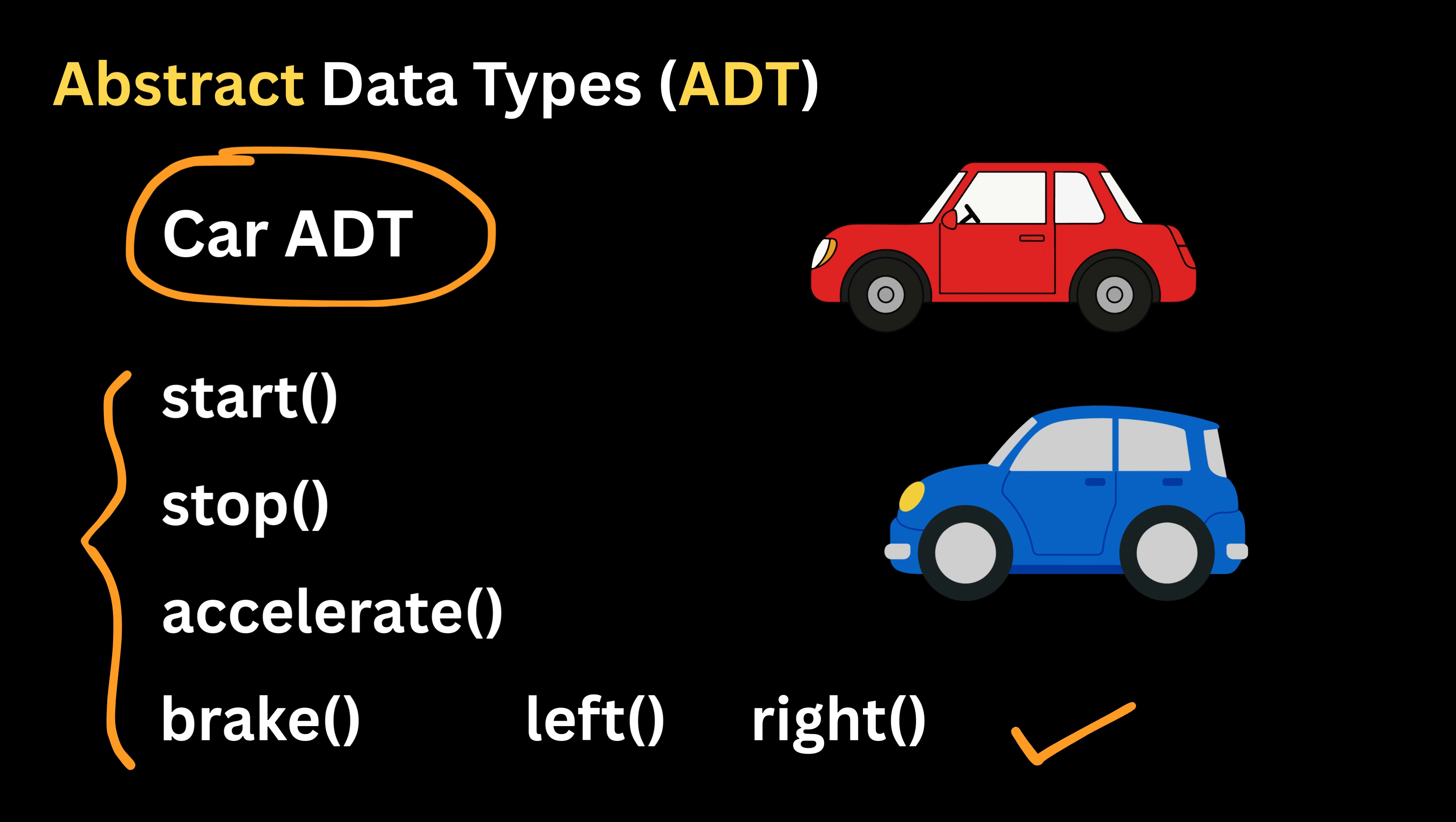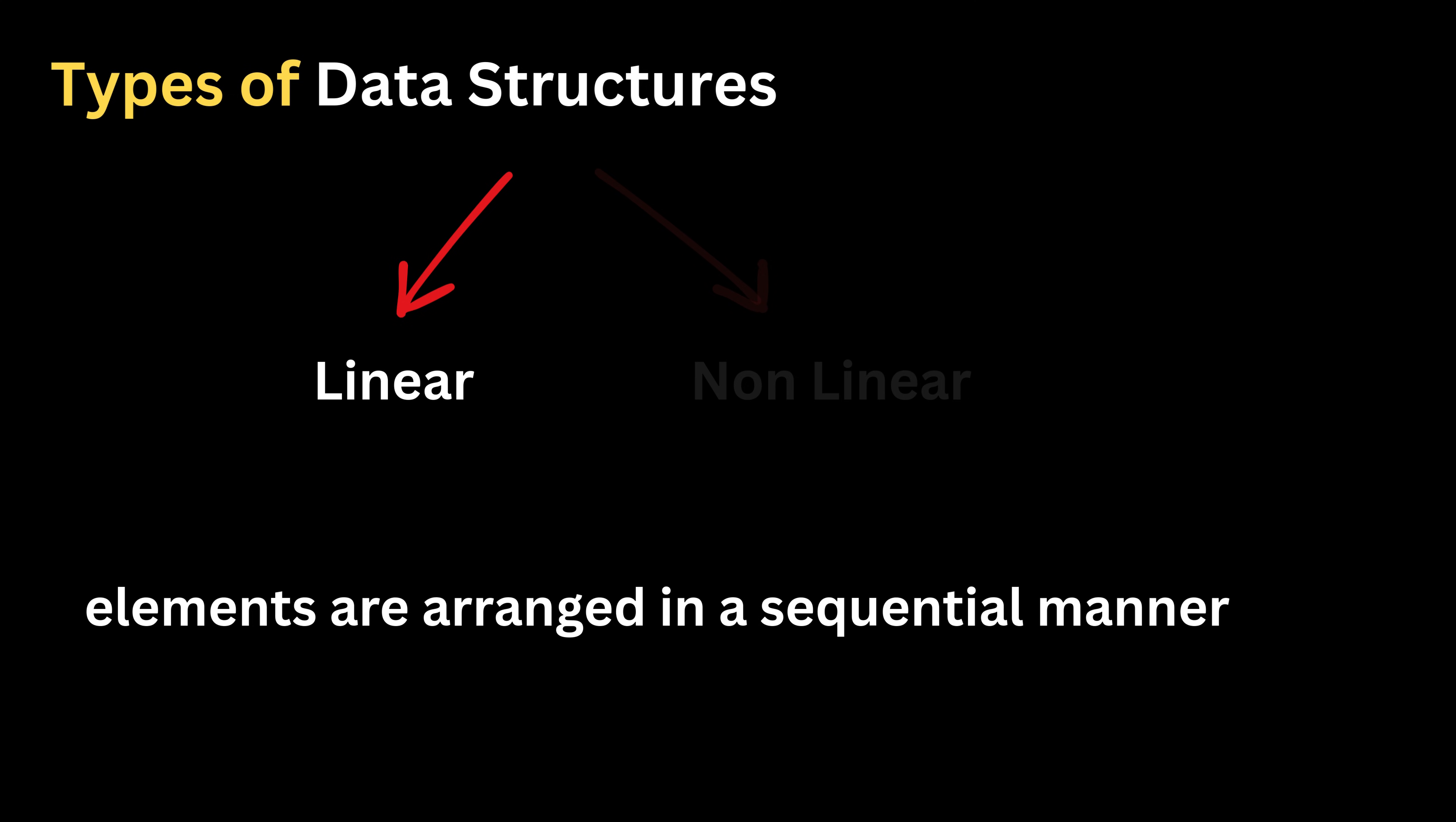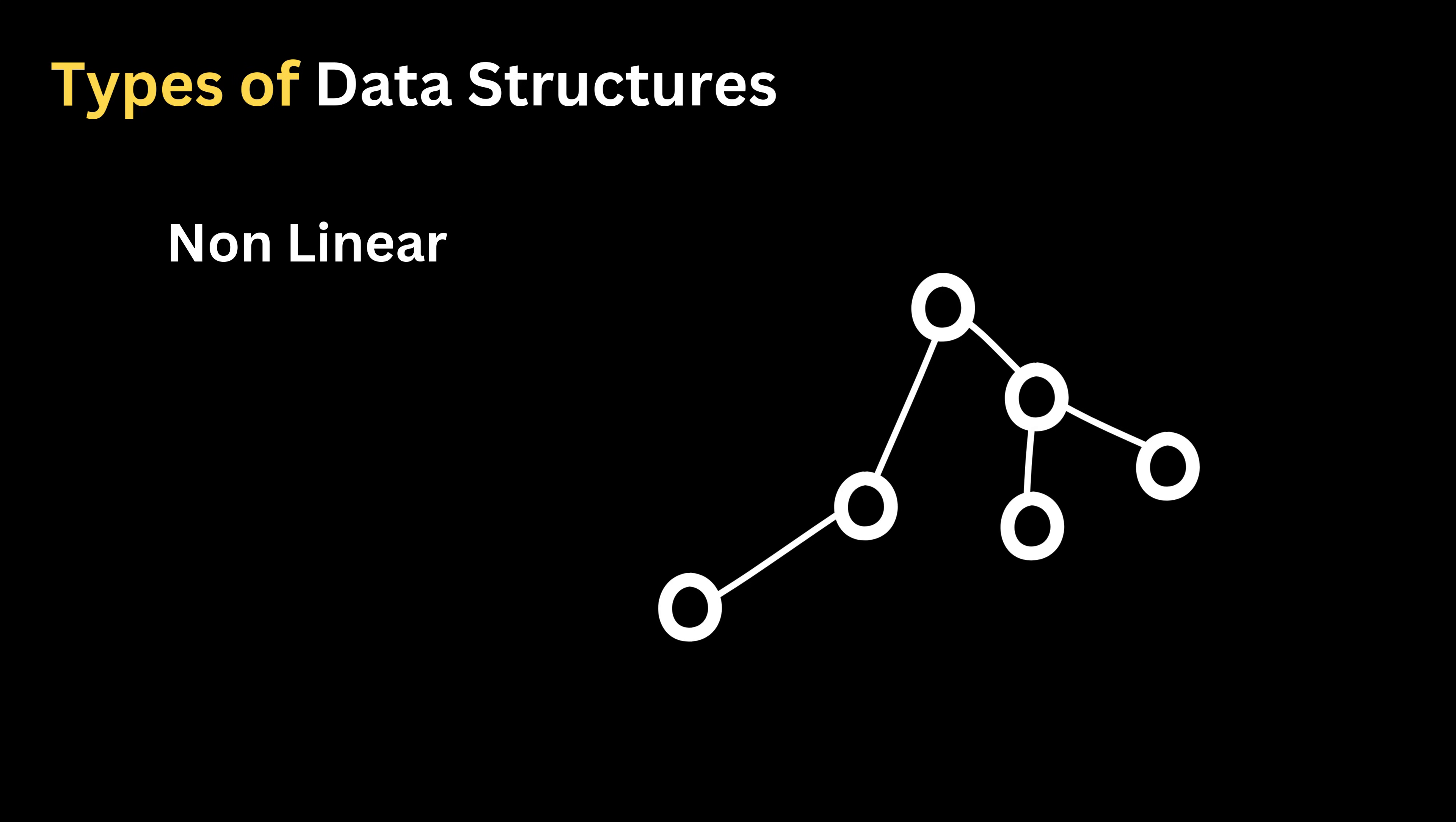Now before we end this video, we will be looking at different types of data structures. Data structures can broadly be separated into two major categories: linear and non-linear. A data structure is considered linear when its elements are arranged one after another in a straight sequential manner. In such structures, every element except the first and last has exactly one element before it and one after it. Arrays, linked lists, stacks, and queues all follow this linear arrangement.